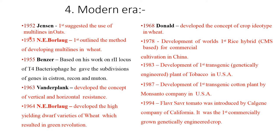In the modern era, in 1952 Jensen first suggested the use of multilines in oat. In 1953, Norman Borlaug first outlined the method of developing multilines in wheat. In 1963, the concept of vertical and horizontal resistance was established.